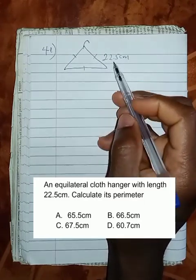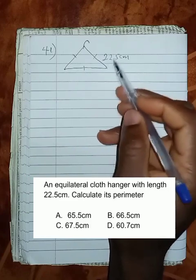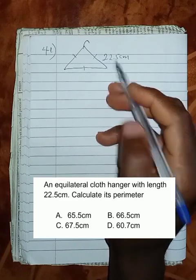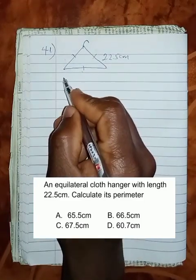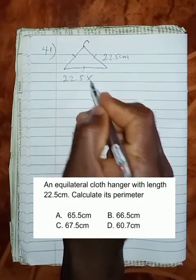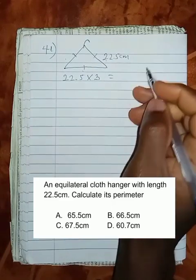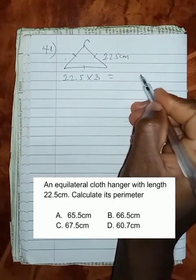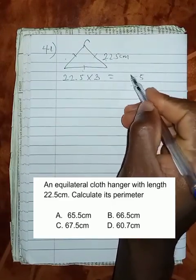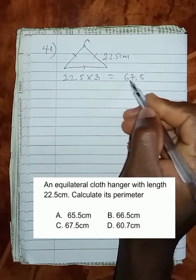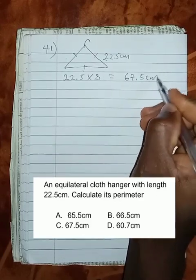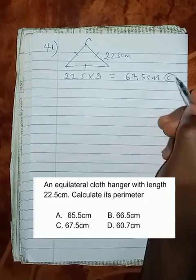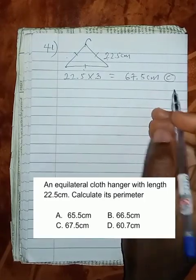To get the perimeter, we just multiply one dimension by 3, because the remaining sides must be 22.5. So we say 22.5 multiplied by 3. When we multiply this, this gives us 67.5 cm as the perimeter, which is option C.